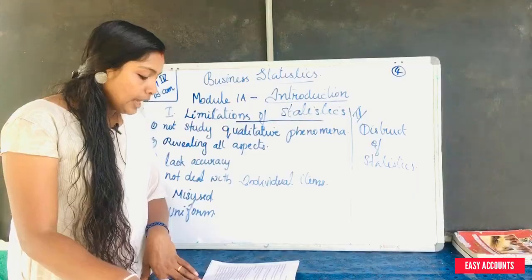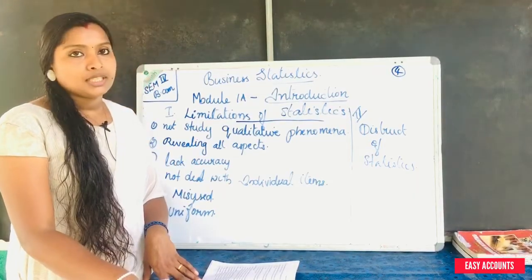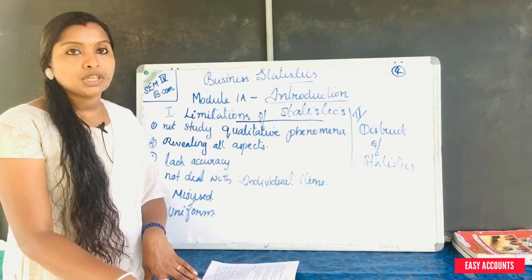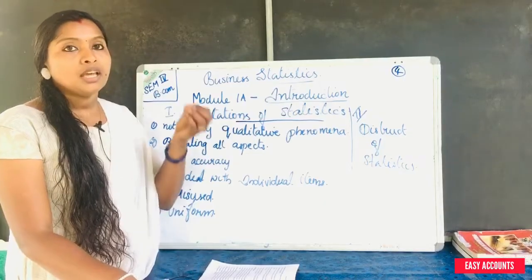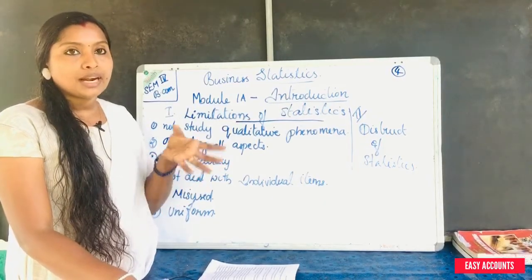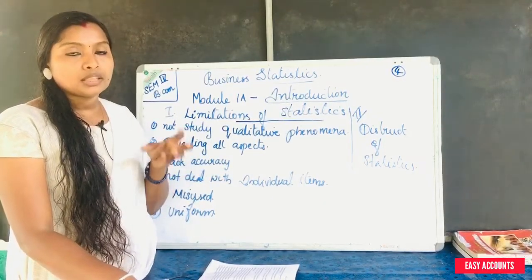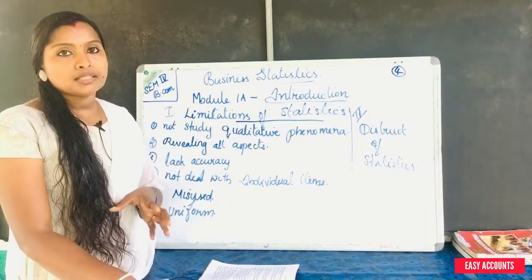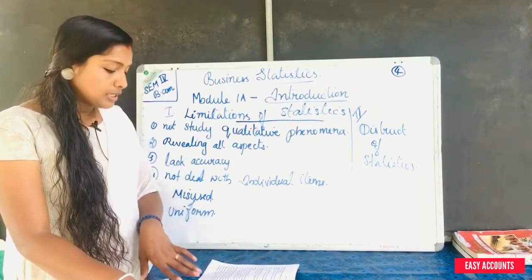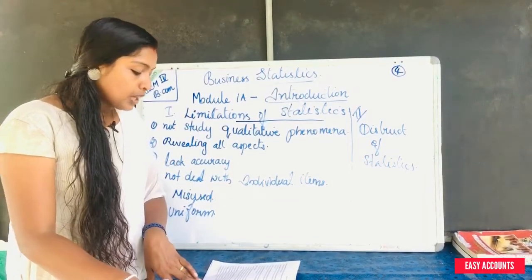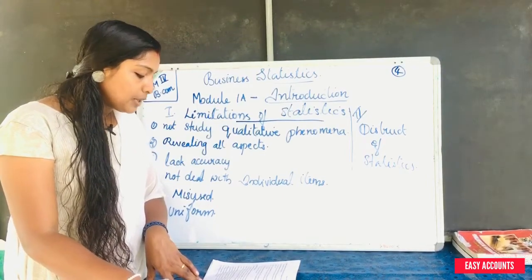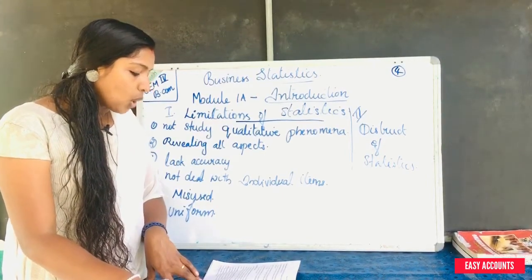Statistical laws are based on the theory of probability. Because they are probabilistic in nature, the same conclusion cannot be arrived at in similar conditions on all occasions. This makes statistics inherently less accurate than exact sciences.